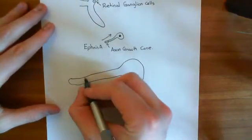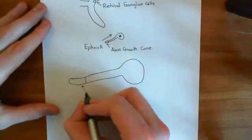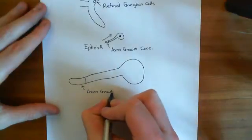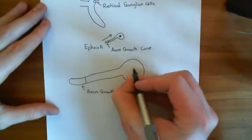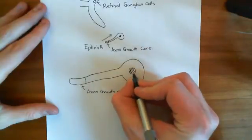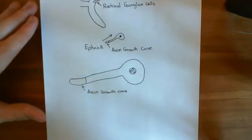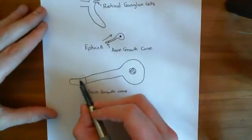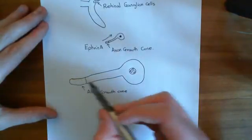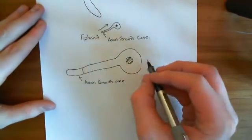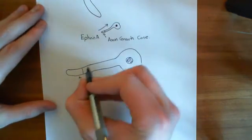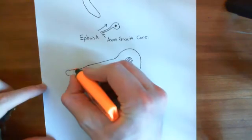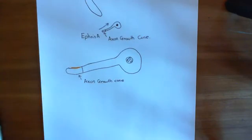Continually, what's happening is that you're getting action potentials being fired down this growing axon of the retinal ganglion cell. So you're getting action potentials coming down here. What that means is that continually, the membrane of this furthest portion — this axon growth cone — is undergoing an action potential. So let me go through the steps of an action potential. This portion of membrane here is going to be stimulated to undergo an action potential.